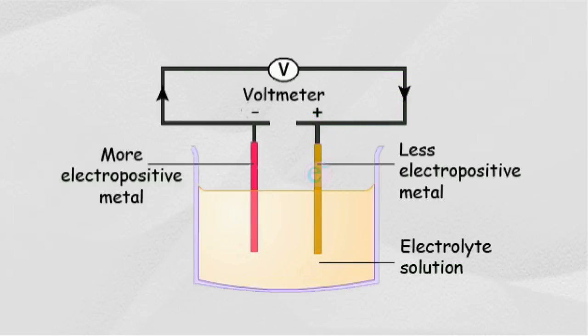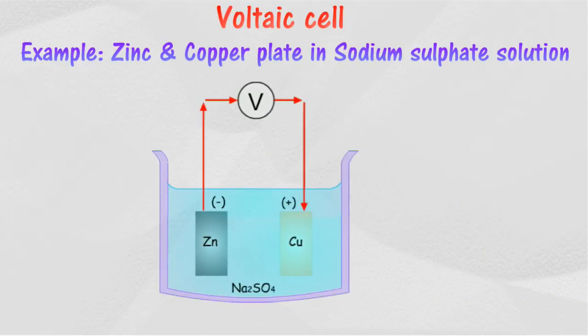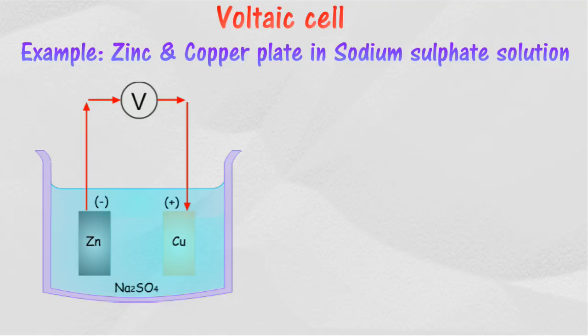For example, in a zinc and copper voltaic cell, zinc and copper plates are immersed in sodium sulfate solution. The zinc plate will dissolve, forming zinc ions. As zinc is more electropositive than copper, electrons produced will accumulate at the zinc plate, making it negatively charged.